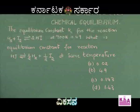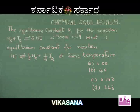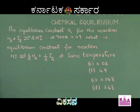The next question: the equilibrium constant Kc for the reaction H2 + I2 in equilibrium with 2HI at 700 Kelvin is 49. What is the equilibrium constant for the reaction HI in equilibrium with ½H2 + ½I2 at the same temperature? Option A is 0.02, Option B is 49, Option C is 0.143, and Option D is 1.43.